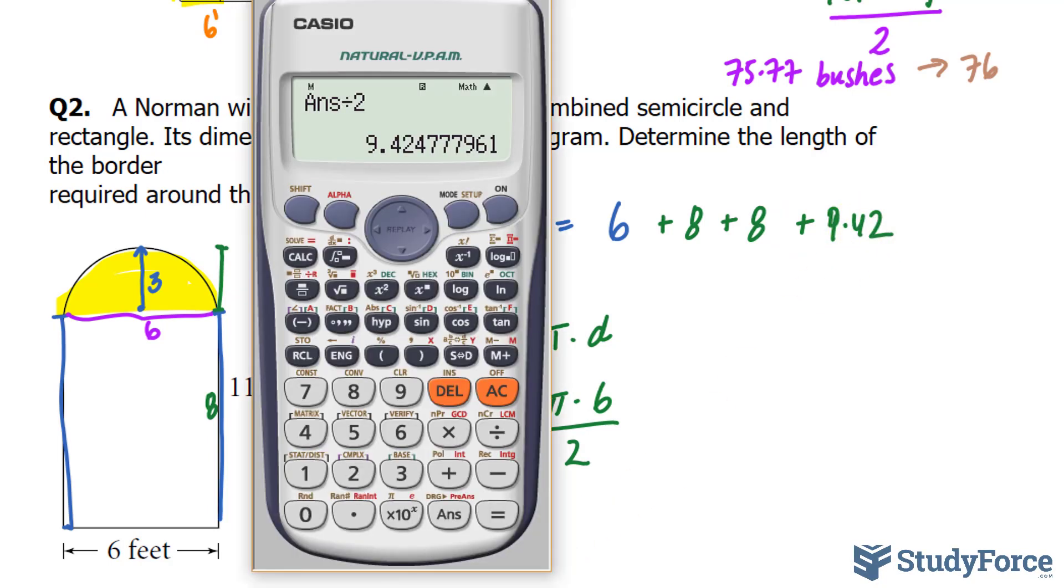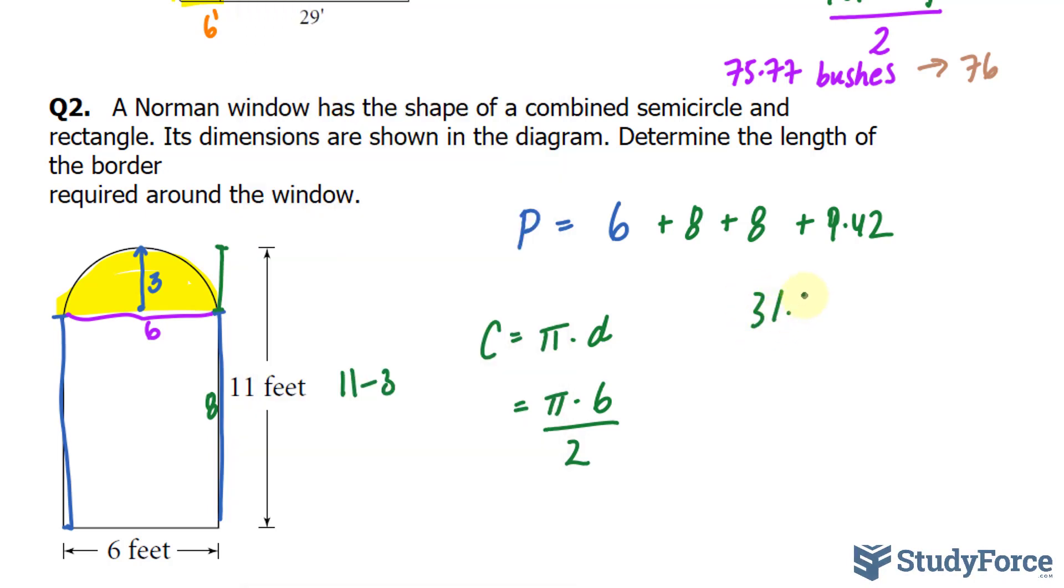Plus 9.42. I can go ahead and sum these up. So we have 6 plus 8, plus another 8, plus 9.42, gives us 31.42. 31.42 feet around this Norman window.